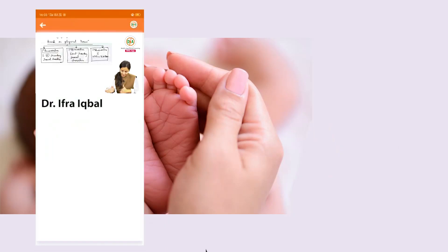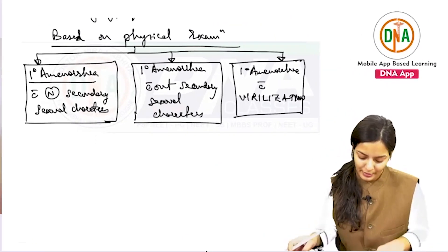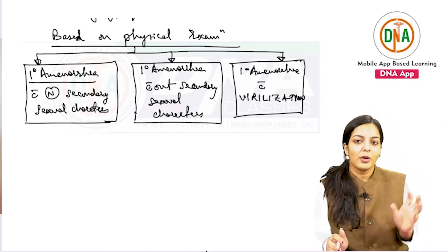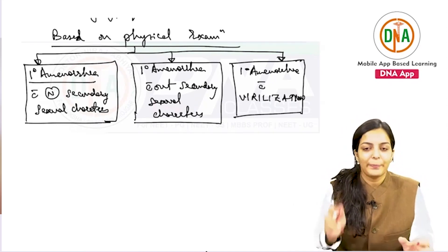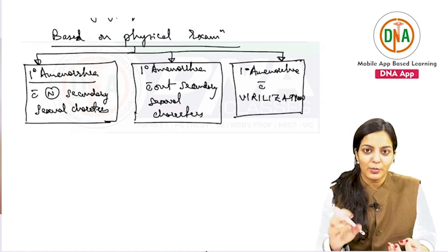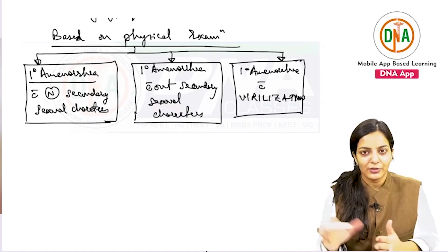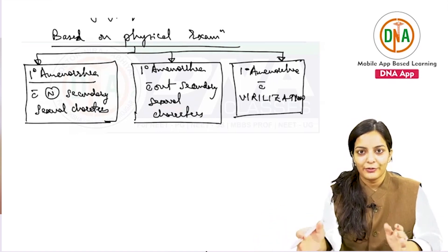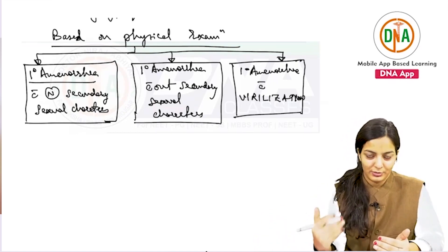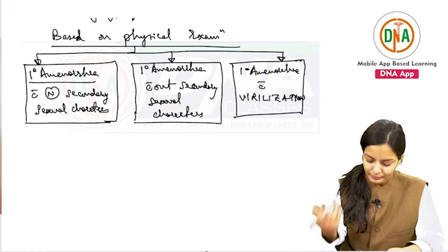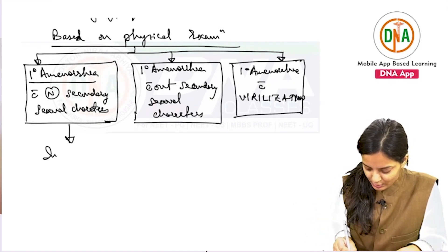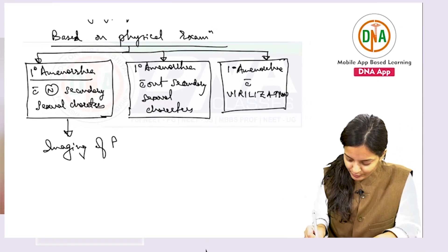Now, each category of patient — how to evaluate them. First, we will see primary amenorrhea with normal secondary sexual characters. When normal secondary sexual characters are present, that means the ovaries are secreting hormones normally. So there is no problem with the ovaries. We have to analyze the outflow tract — that is the uterus, cervix, and vagina — and for that we have to do imaging of the pelvis.